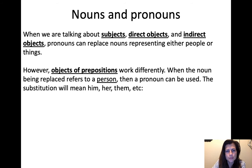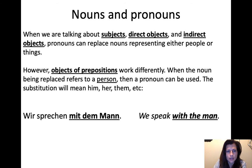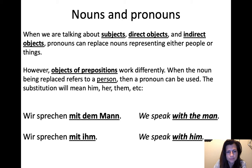But when we're talking about objects of prepositions, there's a different rule. When the noun being replaced refers to a person, then a pronoun can be used. You can say 'mit mir' (with me), 'mit dir' (with you), 'ohne mich' (without me), 'ohne dich' (without you), 'ohne sie' (without her), 'ohne ihn' (without him), 'mit ihm' (with him), or 'mit ihr' (with her). So when they're people, you just use the preposition and then whichever case that preposition requires. For example, 'wir sprechen mit dem Mann' (we speak with the man) becomes 'wir sprechen mit ihm.'